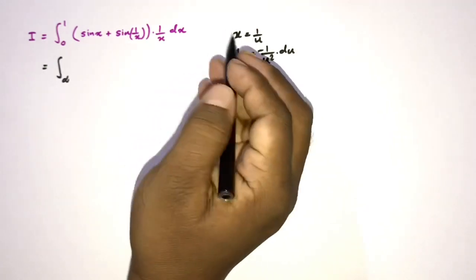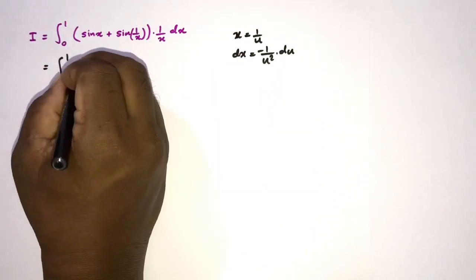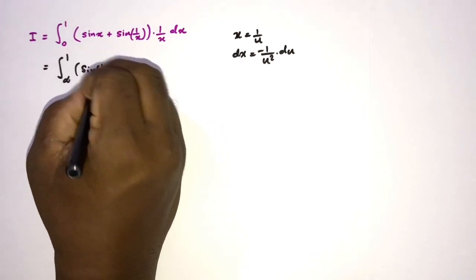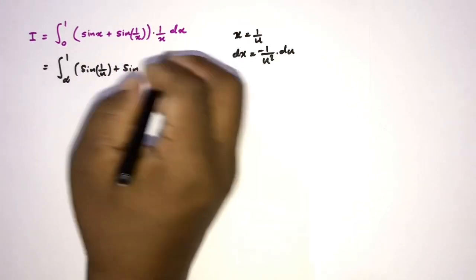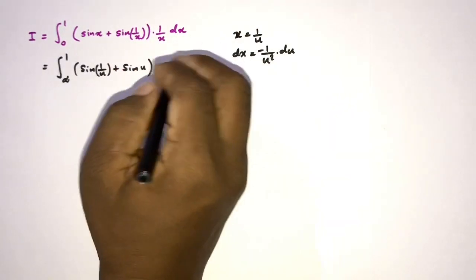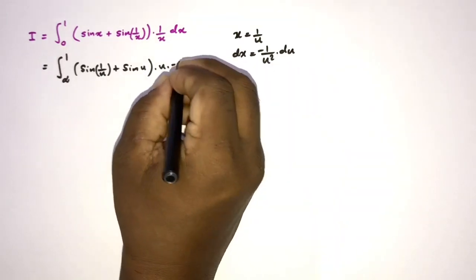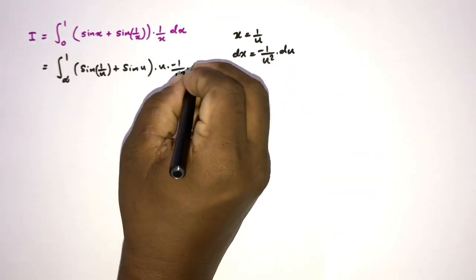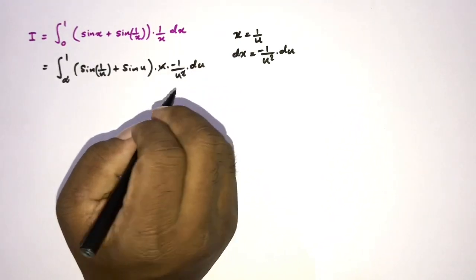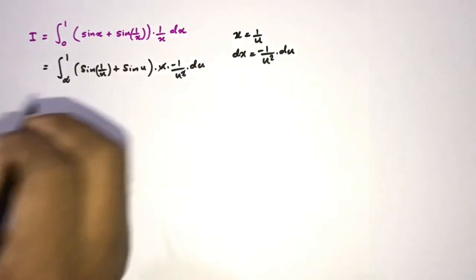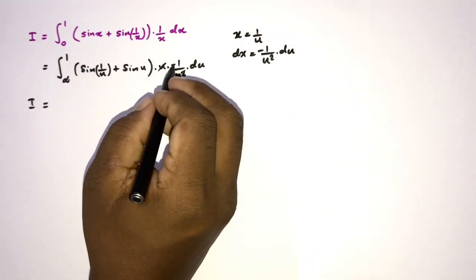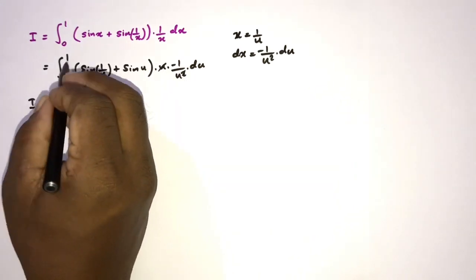Now we can plug in. The lower limit: when x approaches 0, u approaches infinity. The upper limit: when x approaches 1, u approaches 1. We substitute sin(1/u) + sin(u), times u, times −(1/u²) du. The u factors cancel.